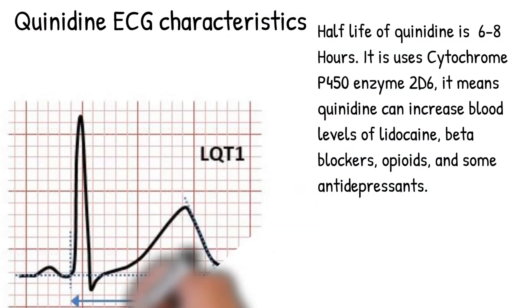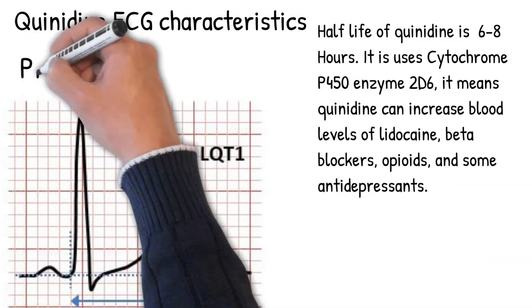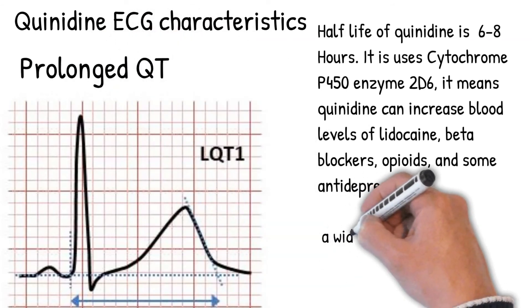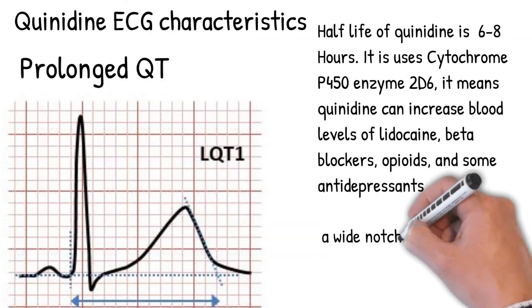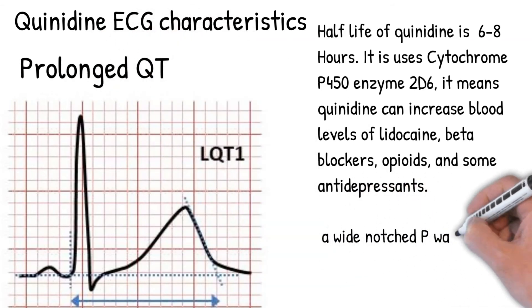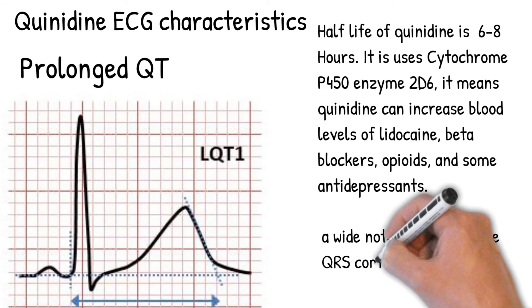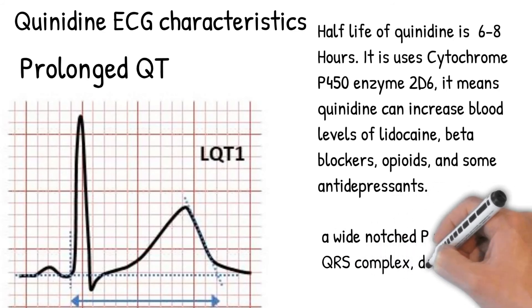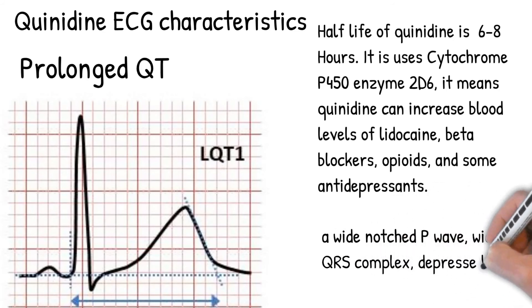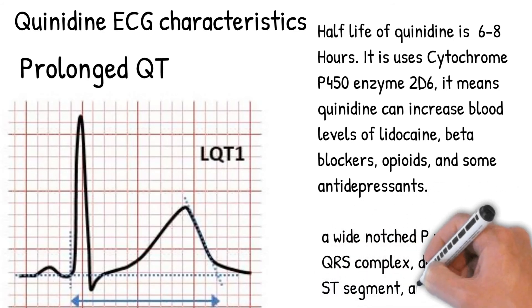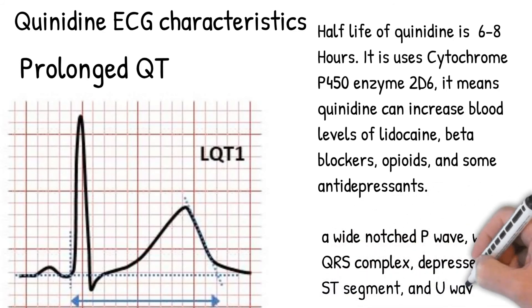Quinidine effects on ECG include prolonging the QT interval, a wide-notched P wave, wide QRS complex, depressed ST segment, and U waves. These are the results of both slow depolarization and repolarization.